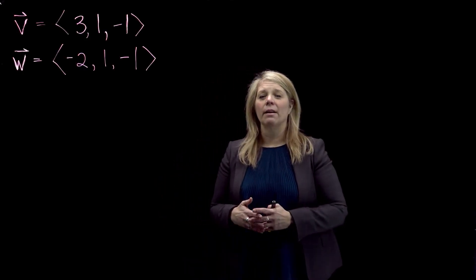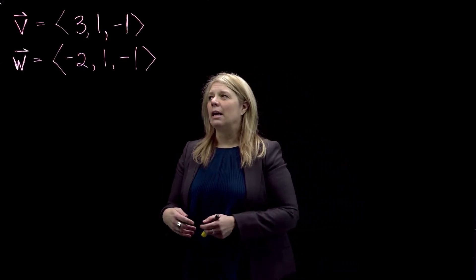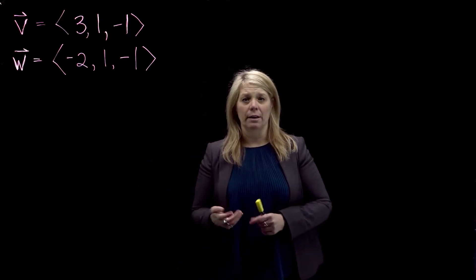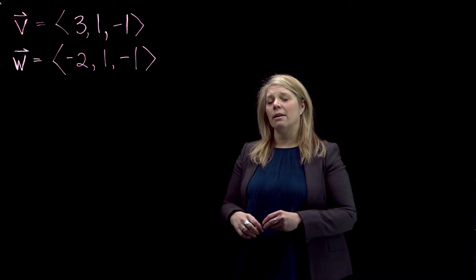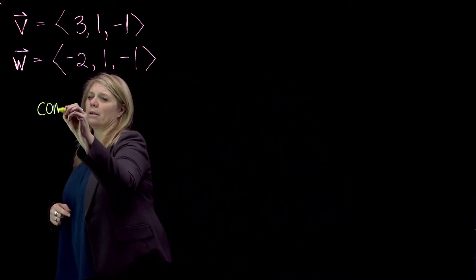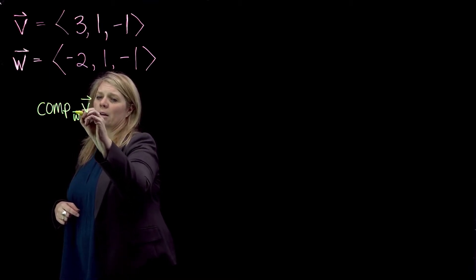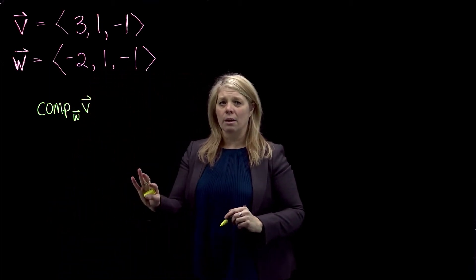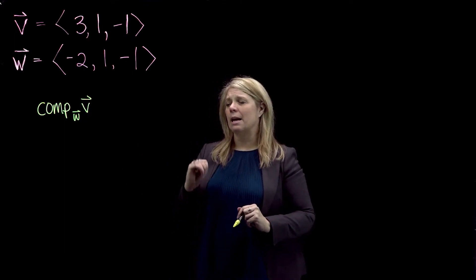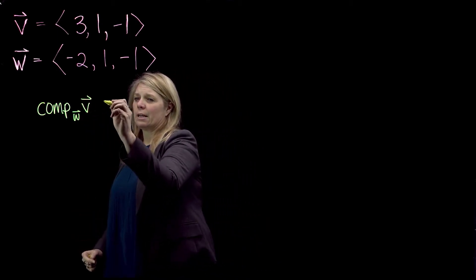In this video, we're going to do some calculations — finding the component of one vector along the other and the projection of each vector onto the other. We're going to start by finding the component of V along W. This is a scalar quantity that measures how much of V is along W.